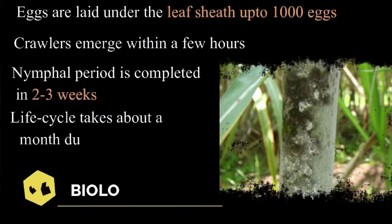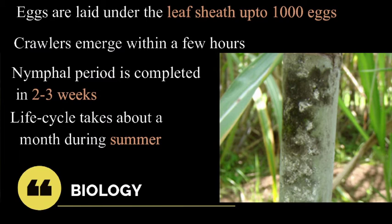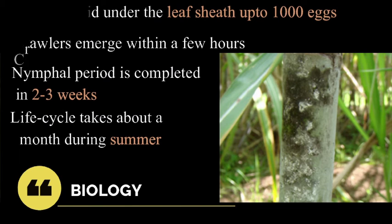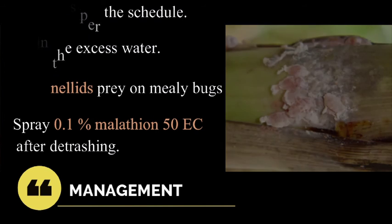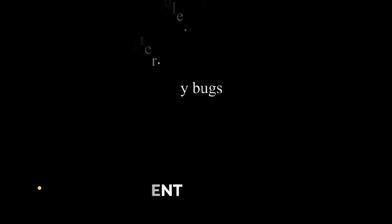Biology: eggs are laid under the leaf sheath, up to 1000 eggs. Crawlers emerge within a few hours; nymphal period is completed within two to three weeks. The life cycle takes about a month during summer. Management: detrashing should be done as per schedule; drain the excess water. Coccinellids are the predators which prey on mealy bugs. Spray about 0.1 percentage malathion 50 EC after detrashing.